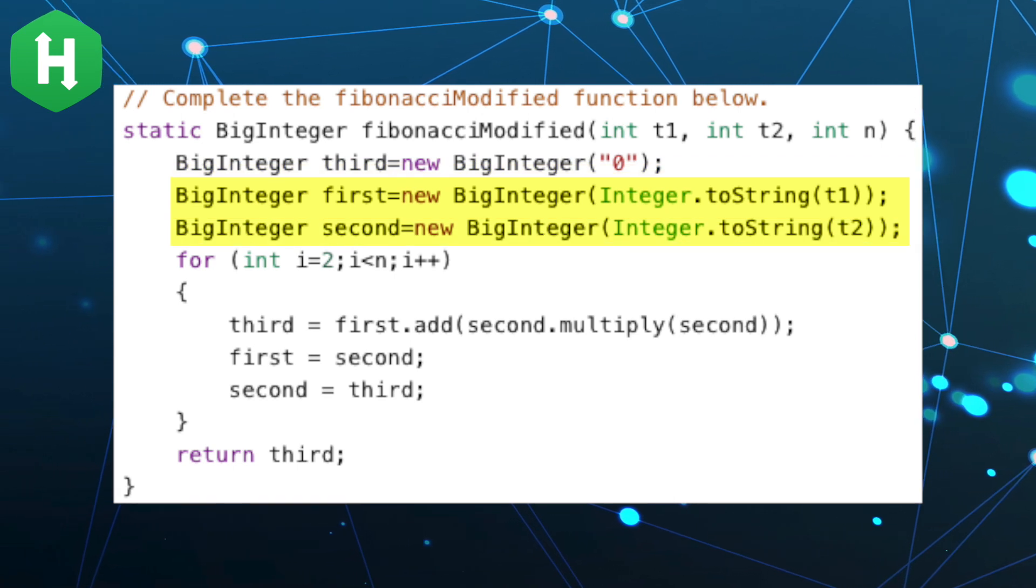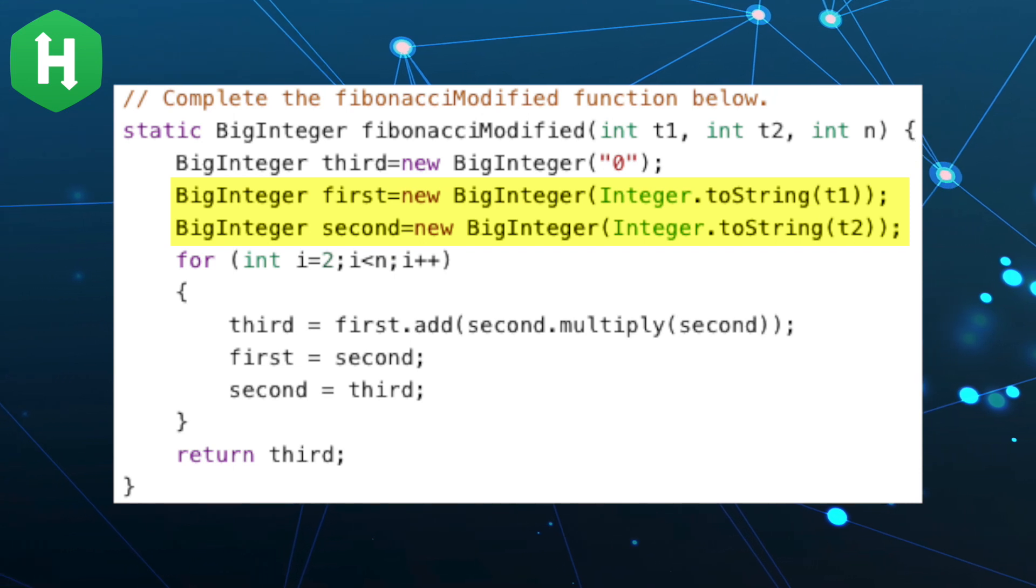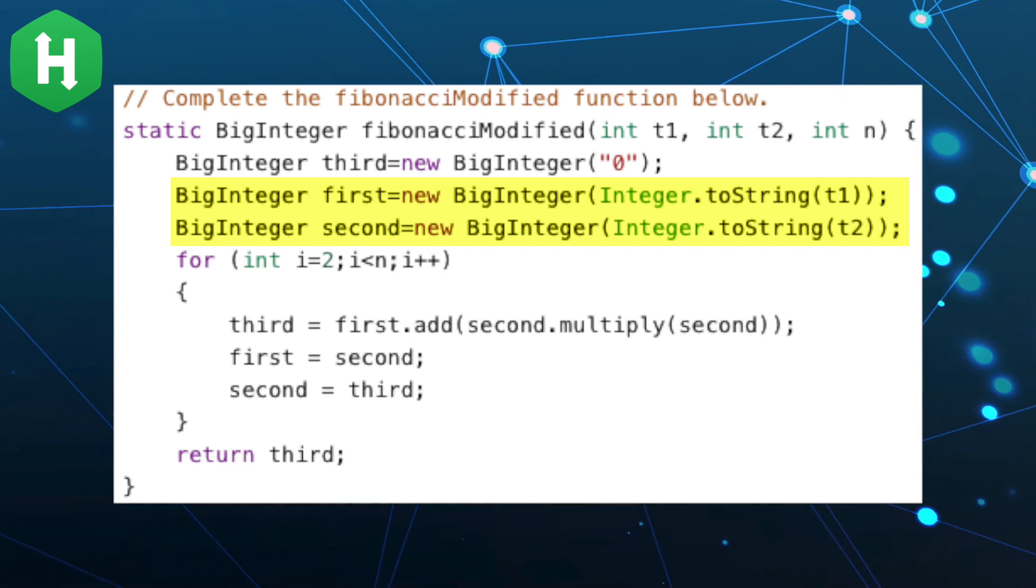Next, let's instantiate two more BigIntegers with the values of the incoming parameters representing the first two numbers in our modified Fibonacci sequence.